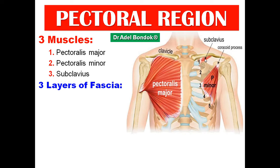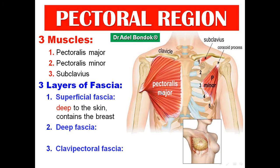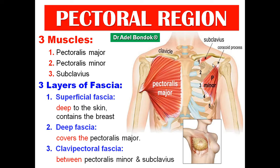The three layers of fascia: first is the superficial fascia, which is deep to the skin and contains the mammary gland or breast. Then the deep fascia, which covers the pectoralis major. And then the clavipectoral fascia, filling the space between pectoralis minor and subclavius.